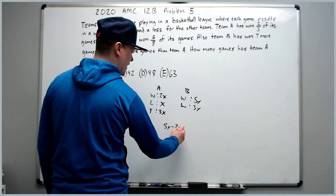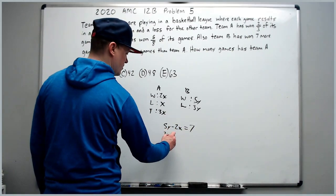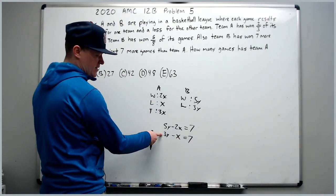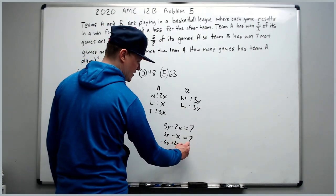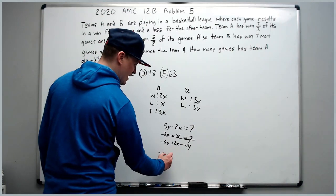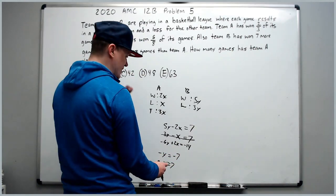Team B has won seven more games than team A. So 5y minus 2x must equal 7. They've also lost seven more. So 3y minus x also equals 7. Multiply this by negative 2 to get negative 6y plus 2x equals negative 14. Add straight down to get negative y equals negative 7. You now know y equals 7.